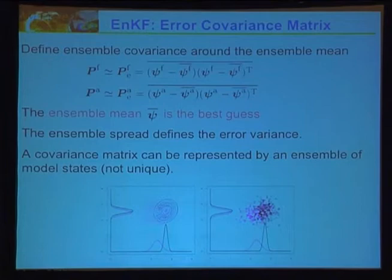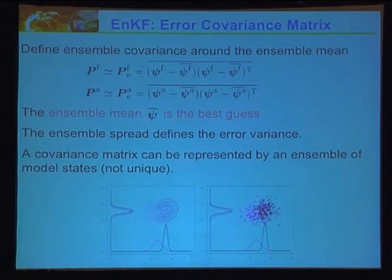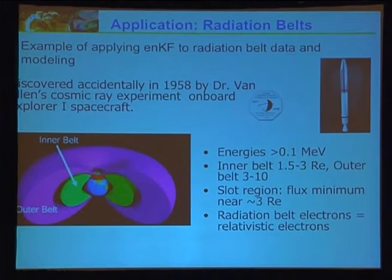The ensemble mean — phi bar — is the best guess of the actual state of the system. We have two moments: the mean gives the best estimate, and the covariance gives the uncertainty in that best estimate. The covariance matrix can be represented by an ensemble of model states. The application we have at Los Alamos is the radiation belt, and I'm going to talk about an example of applying the ensemble Kalman filter to radiation belt modeling.